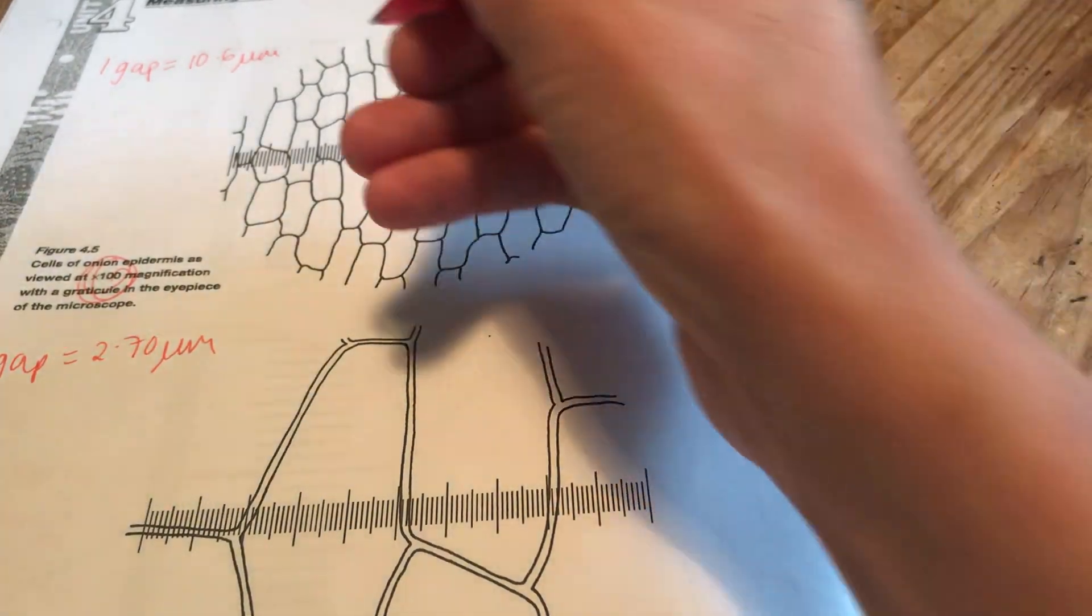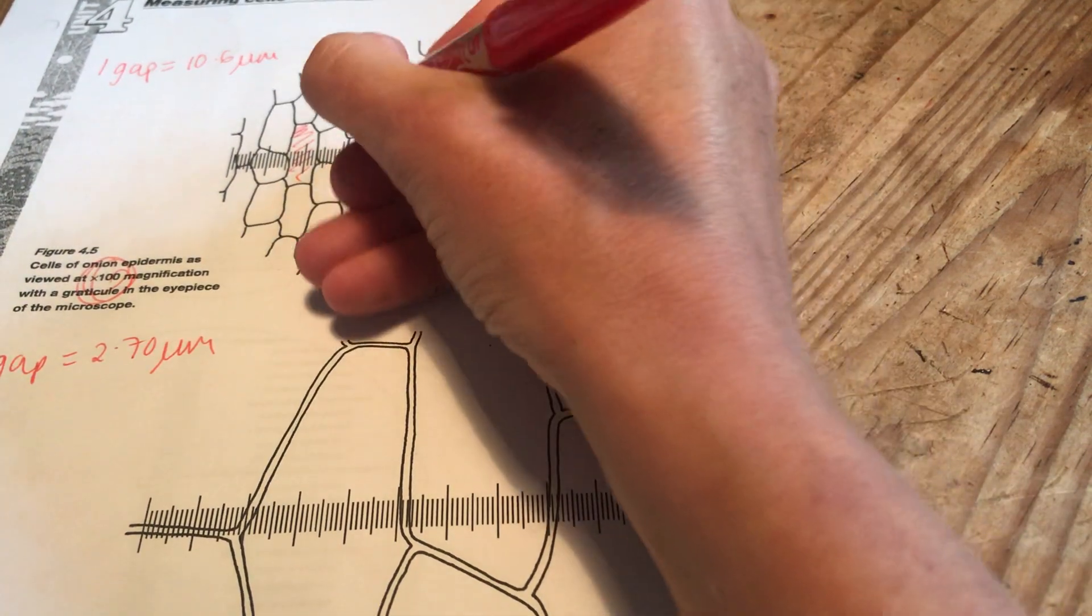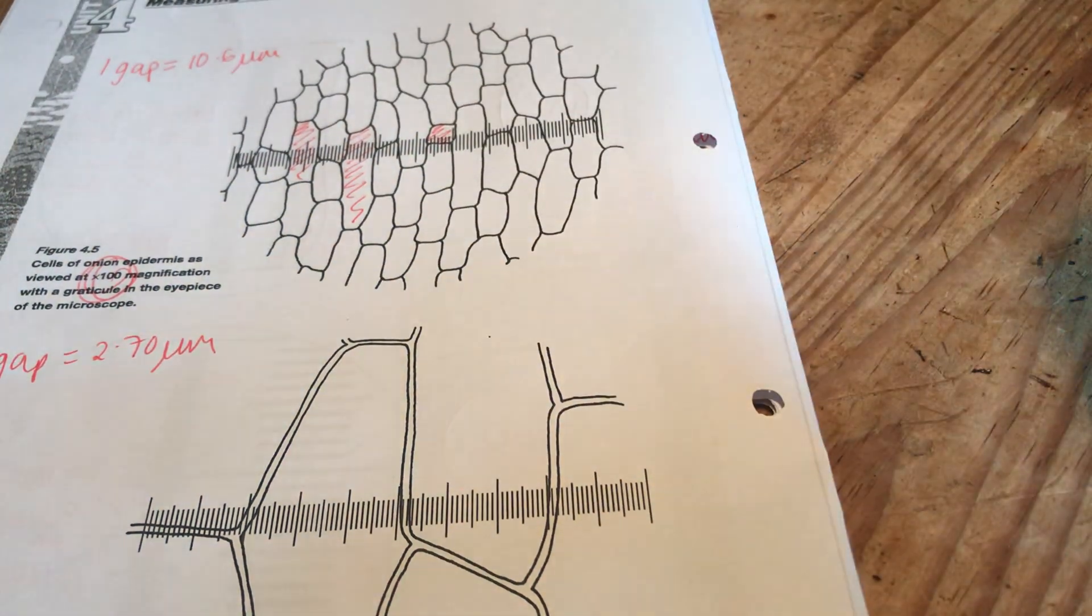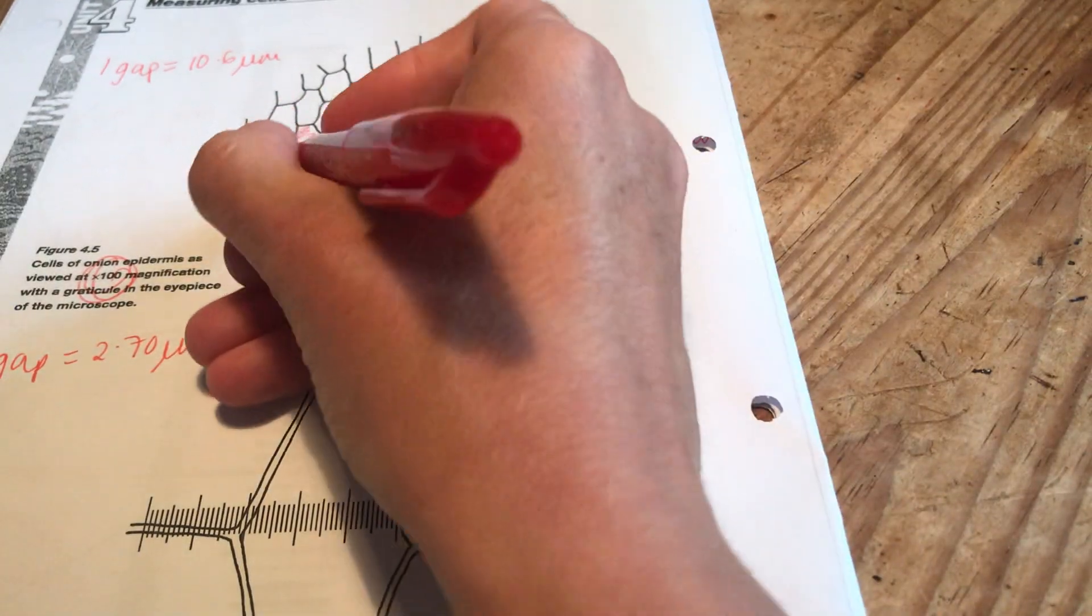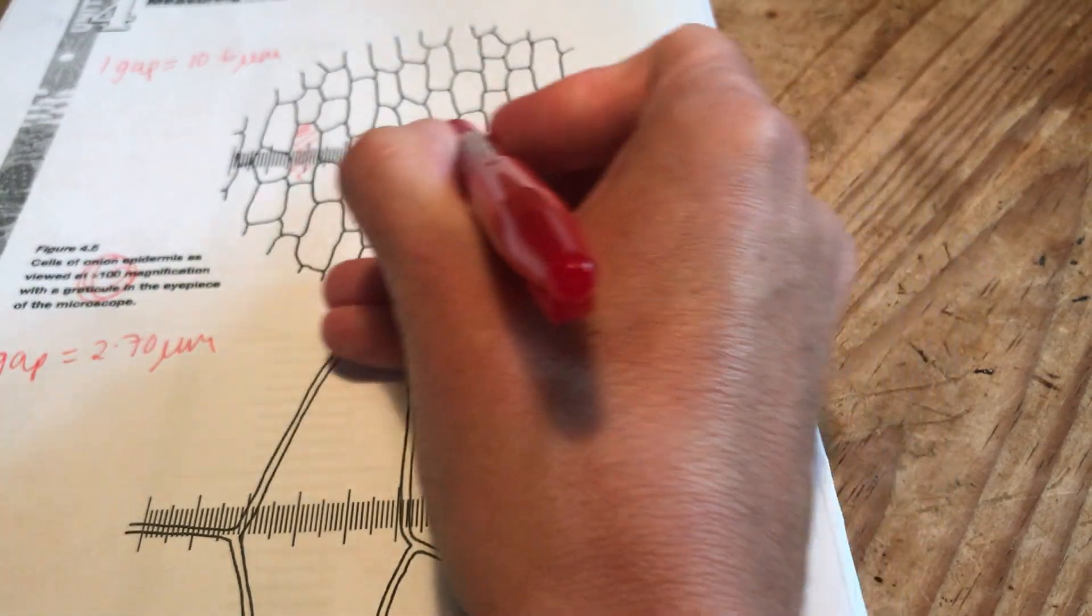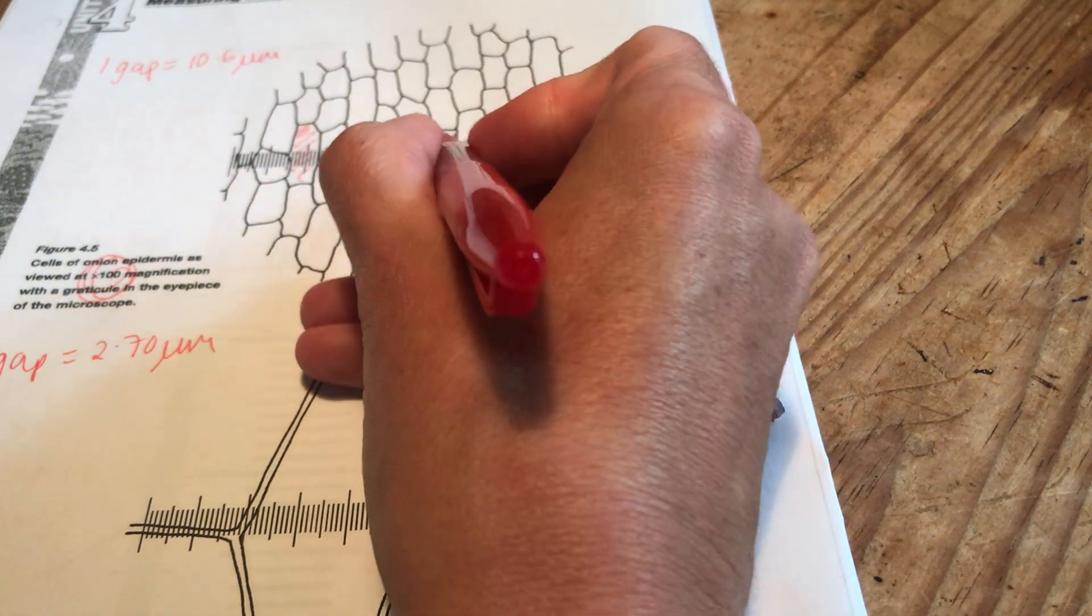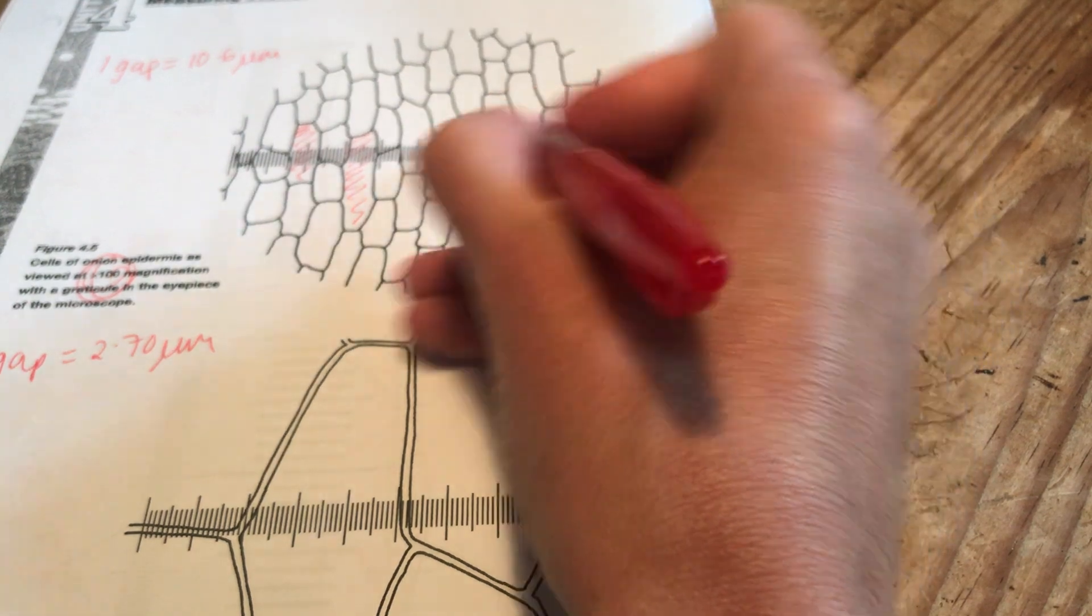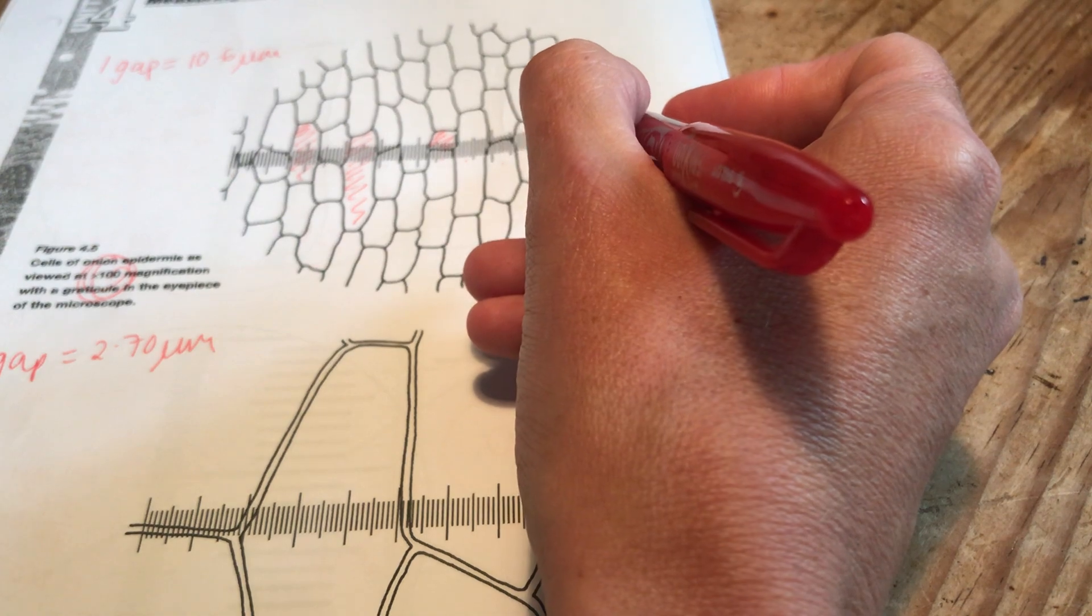Either you pick yourself a couple of cells randomly. We'll do how to do random sampling later in the course. Or you go across the whole lot. You know here there are 100 gaps. And you know that maybe 1, 2, 3, 4, 5, 6, 7, 8, 9, 10, 11, 12, 13 and a little bit cells fit in 100 gaps. So you can do it that way.